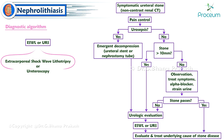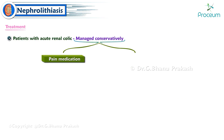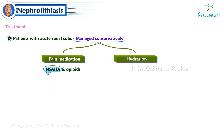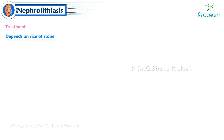Many patients with acute renal colic can be managed conservatively with pain medication and hydration until the stone passes. Both NSAIDs and opioids have traditionally been used for pain control. NSAIDs have the possible advantage of decreasing ureteral smooth muscle tone, thereby directly addressing the mechanism of pain — ureteral spasm. Treatment ultimately depends on stone size.